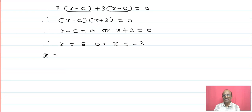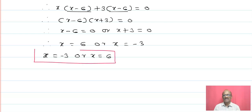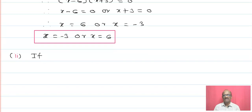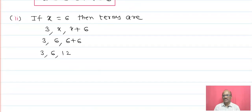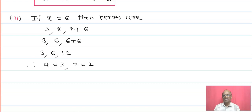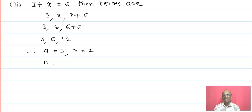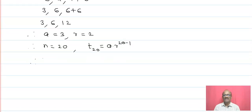We have two values of x. If x equals 6, then the terms 3, x, and x plus 6 become 3, 6, and 12. Therefore the common ratio is 2. So a equals 3 and r equals 2. Therefore for n equals 20, t20 equals a into r raise to 20 minus 1, that is t20 equals 3 into 2 raise to 19.